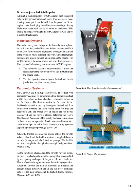As the throttle is advanced and the throttle valve is raised, the fuel is sucked up through the main jet but is controlled by the opening and taper of the jet needle and needle jet, which is effective throughout most of the midrange operation. At about half throttle, the main jet size starts to influence the amount of fuel mixed with the air, and this effect continues until it is the main influence at the highest throttle settings.